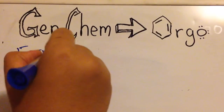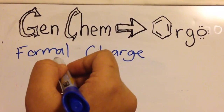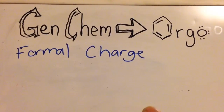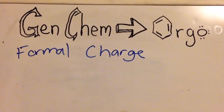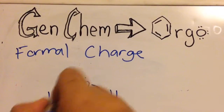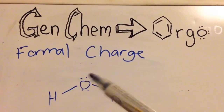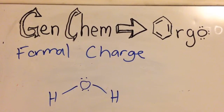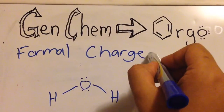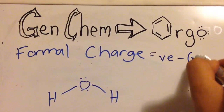The next thing we're going to talk about is formal charge, and this comes up a lot in orgo chem. Formal charge refers to the charge on an atom in a molecule. For example, with water you'd ask: what is the charge on this oxygen, or on the hydrogen? There are different ways taught in textbooks, but I have a really easy way. I highly recommend you memorize this formula: formal charge equals valence electrons minus (lines plus dots).